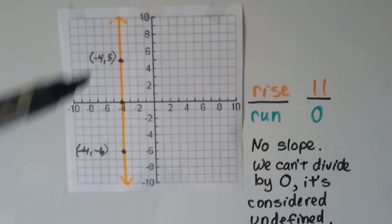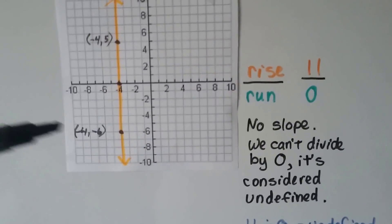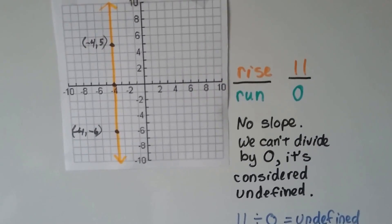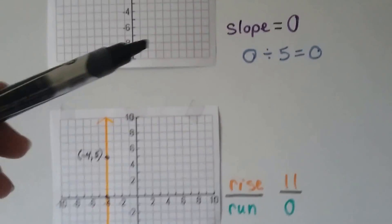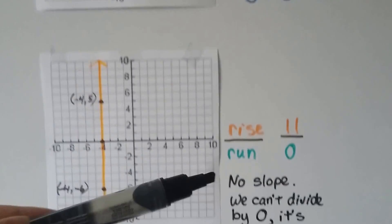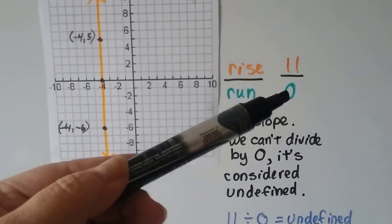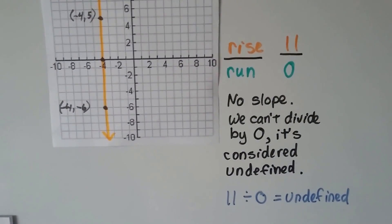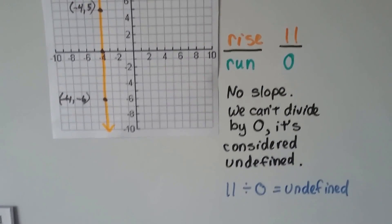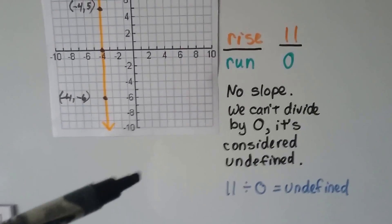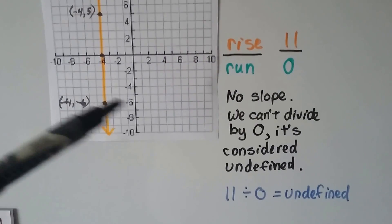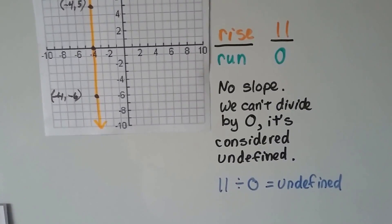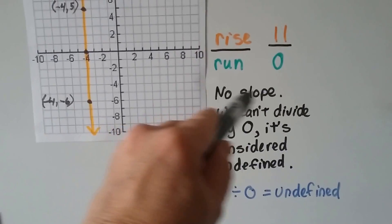But look at this one. This is completely vertical. There's no run at all. It's just got a rise of 11, and the run is a 0. That's no slope. So there's a big difference between 0 slope and no slope, because you can't have a 0 as a denominator. You can't divide by 0. It's considered undefined. Like, it can't be done. So if this comes up on one of the questions, and you see that the run is a 0, your answer should be that there's no slope. That's the answer.